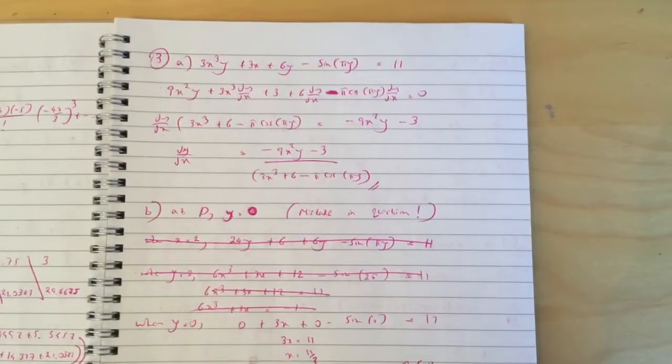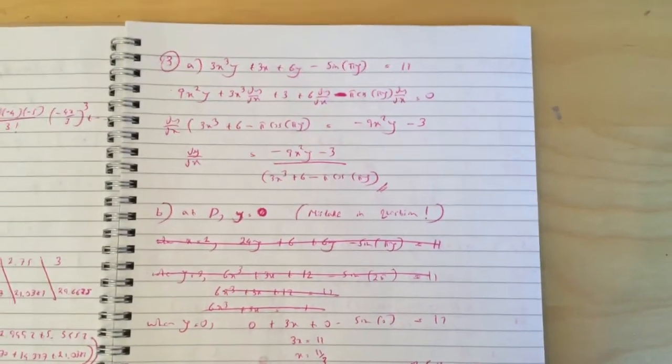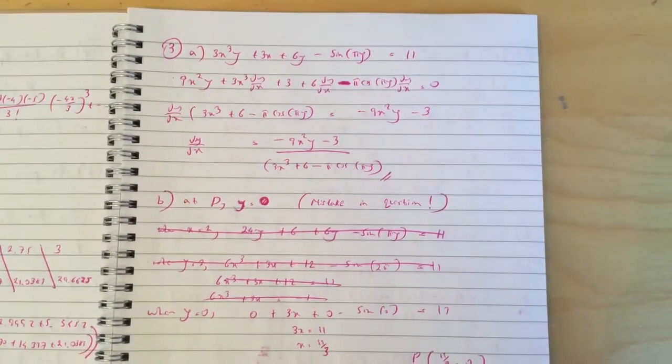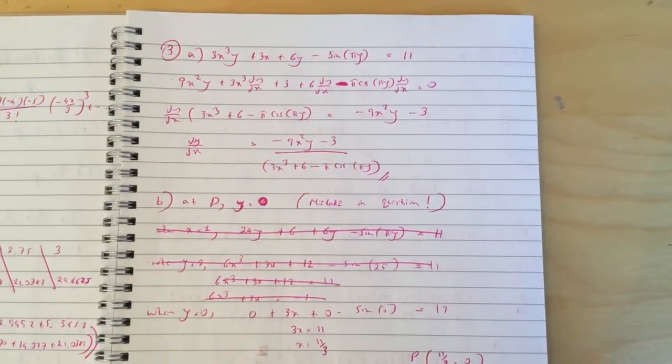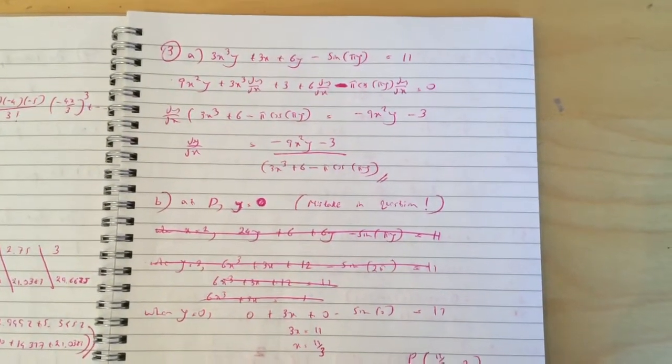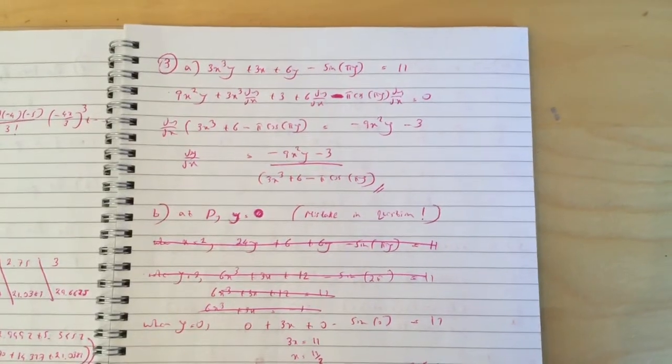Question 3 had a slight issue. Obviously dy/dx works out to be minus 9x squared y minus 3 over 3x cubed plus 6 minus pi cos pi y.